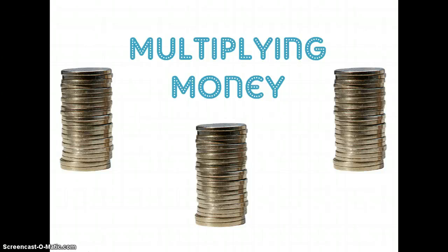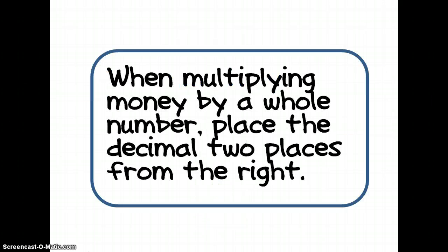This lesson is multiplying money. The first thing you need to remember is that when you're multiplying money by a whole number, place the decimal two places from the right.